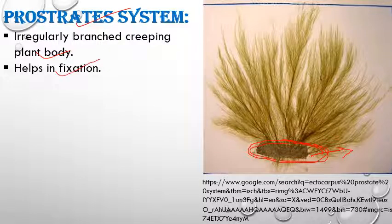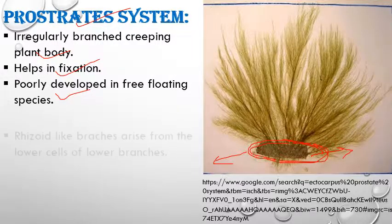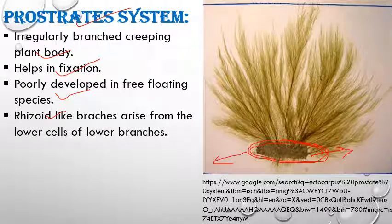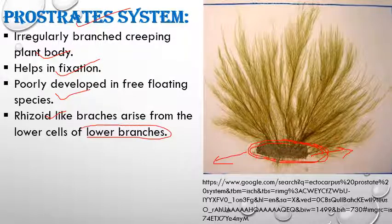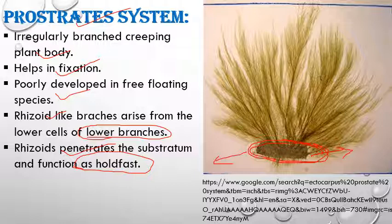The prostrate system helps in fixation on the substratum. In species that free-float in water, this system is not well-developed because its main function is fixation. The rhizoids — small root-like structures which are lower branches — penetrate into the substratum and function as holdfasts, helping in attachment of the plant body, similar to the holdfasts of Oedogonium and Vaucheria.